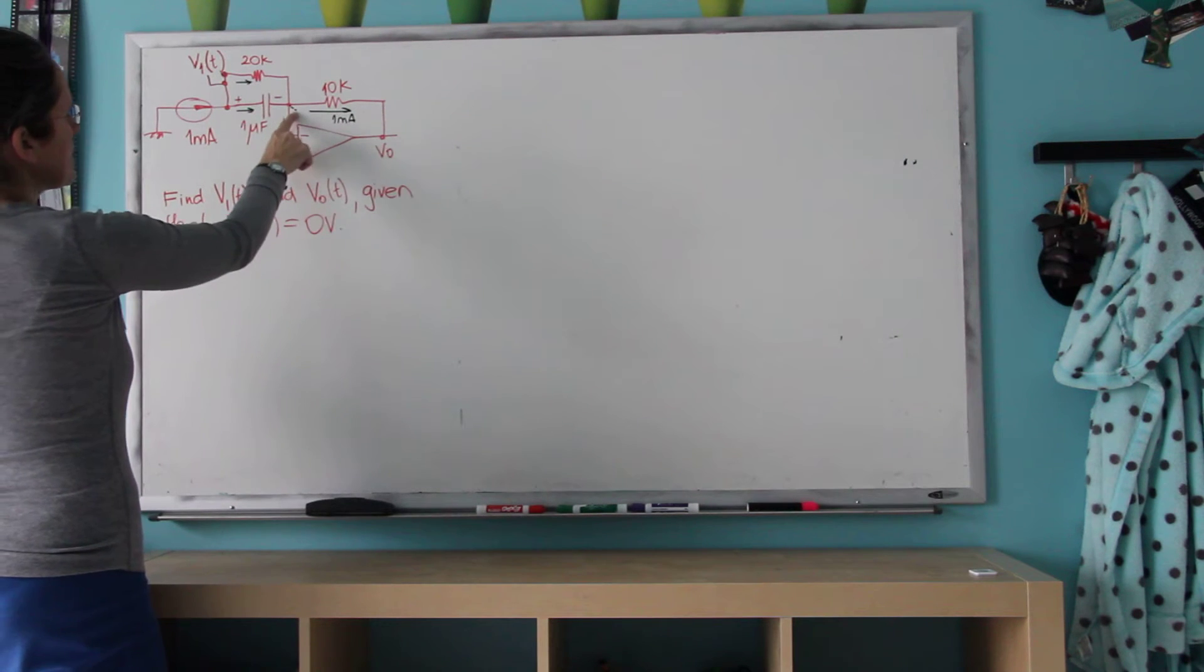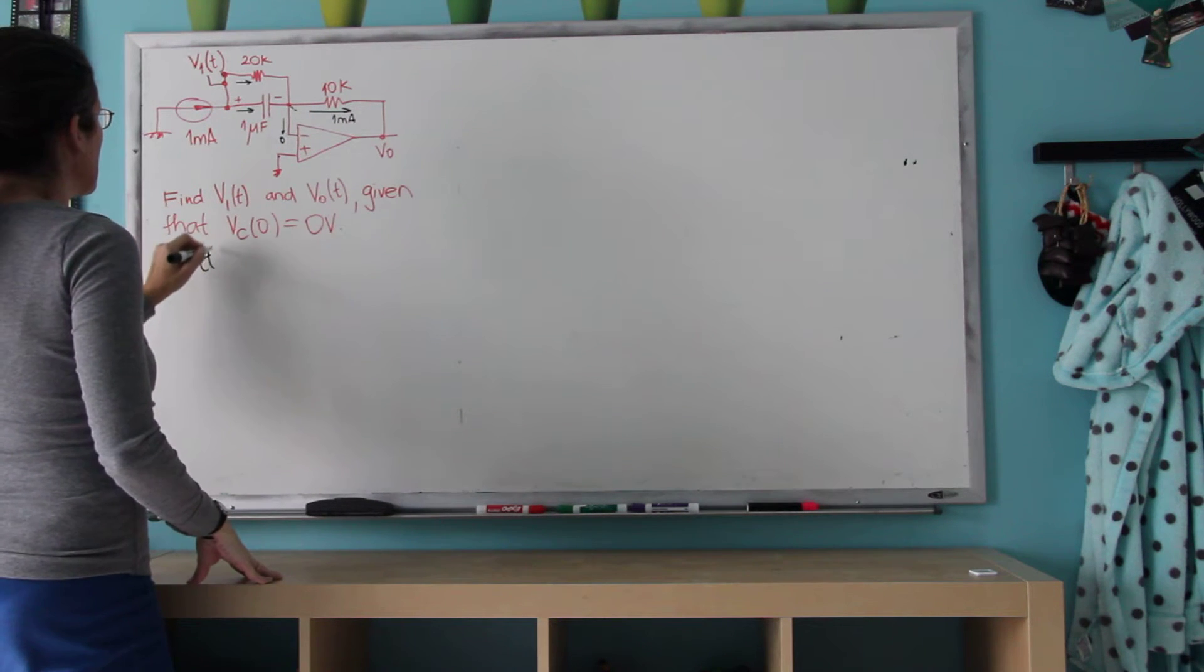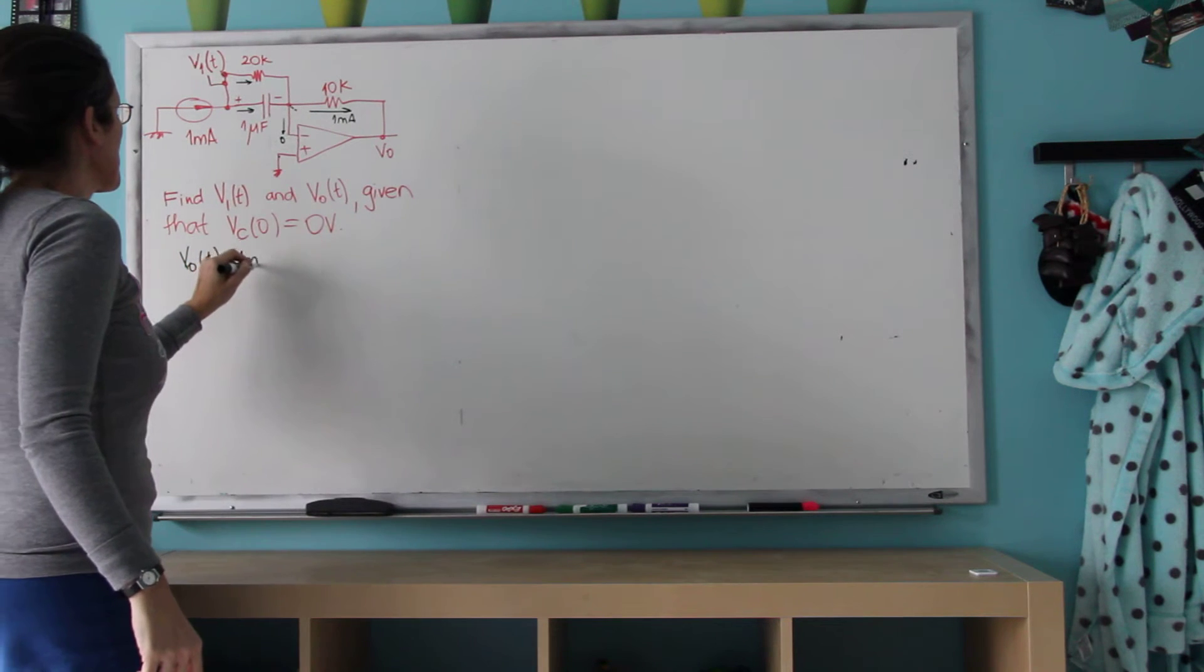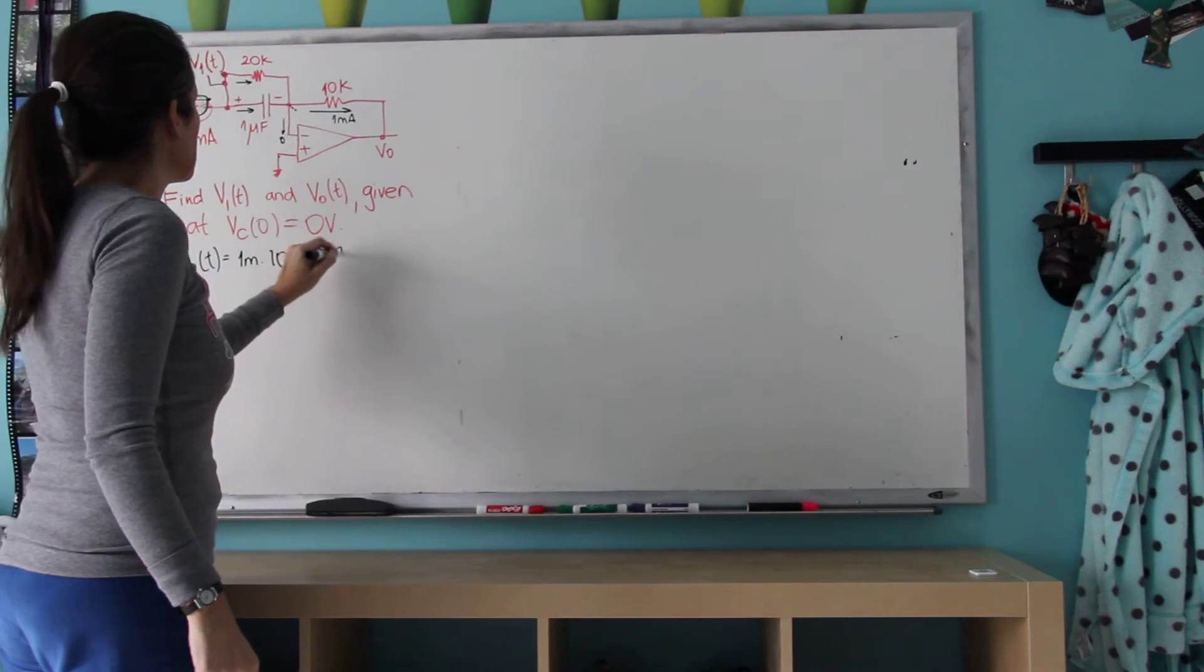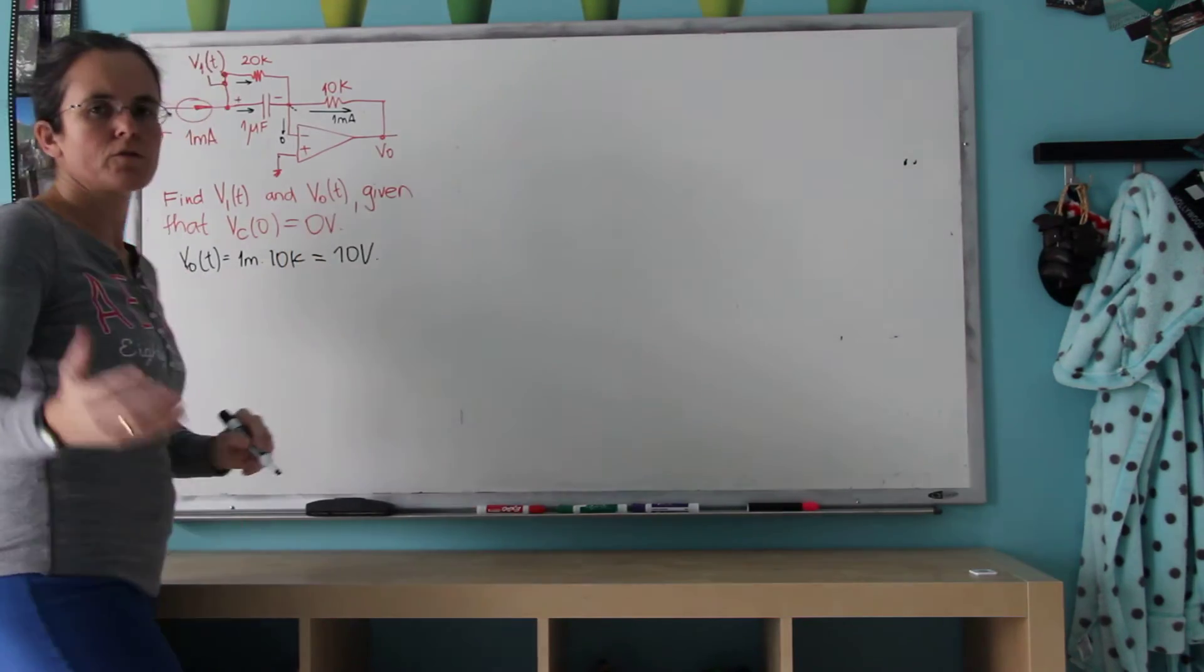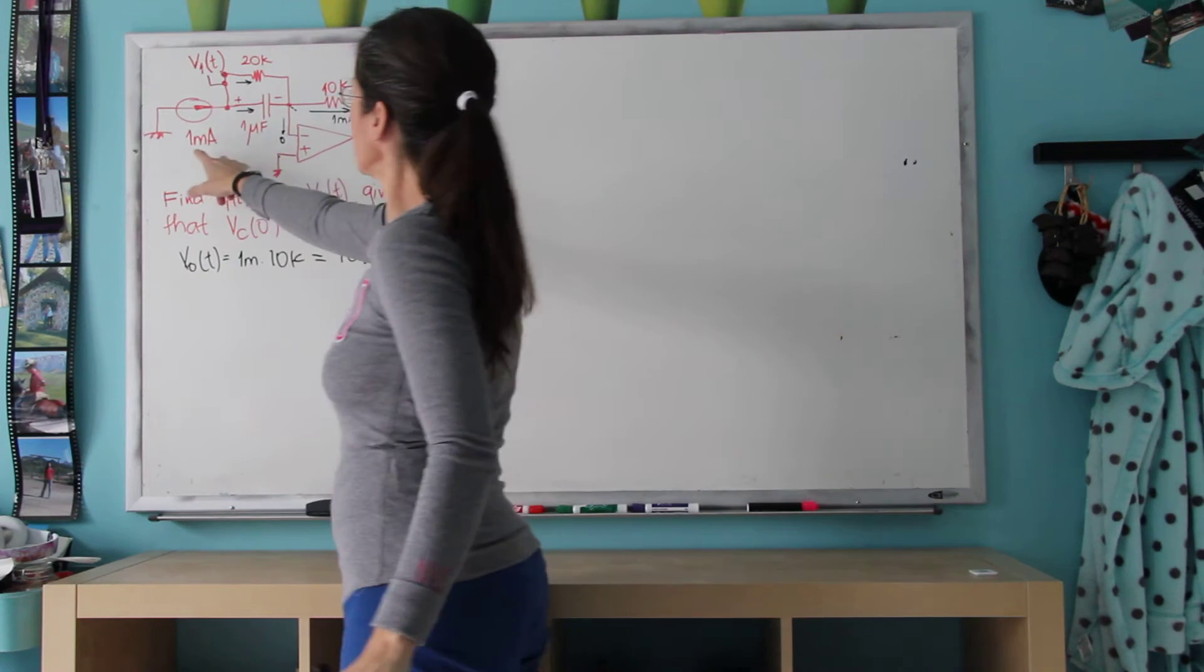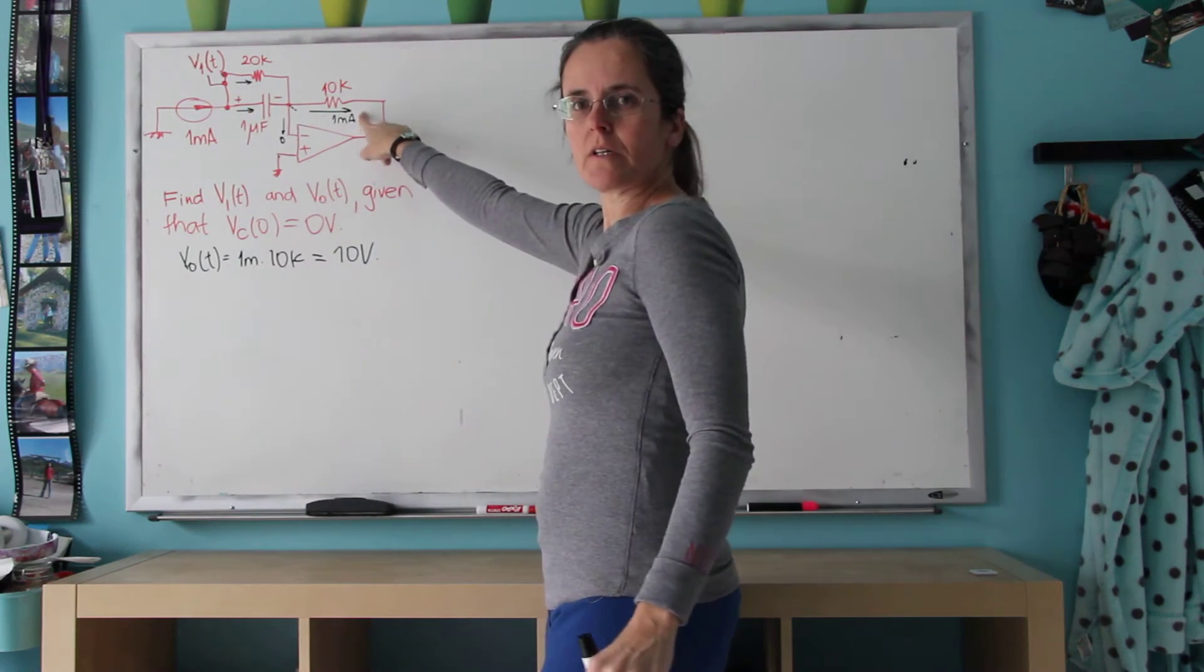So knowing that this is zero and this is 1 milliamp, I can find immediately Vout to always be 1 milliamp times 10k, V equals IR, which means 10 volts. So this is the answer to the first part of the question, what's the output voltage? Because I'm forcing a current through here, it's always 1 milliamp.